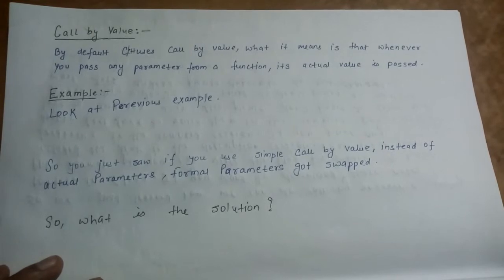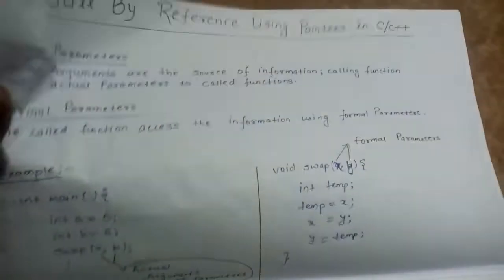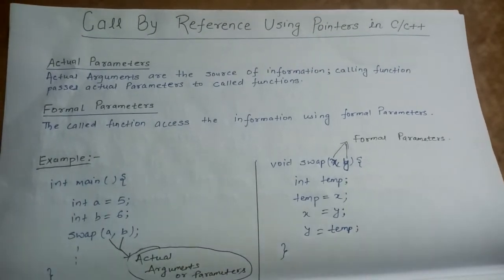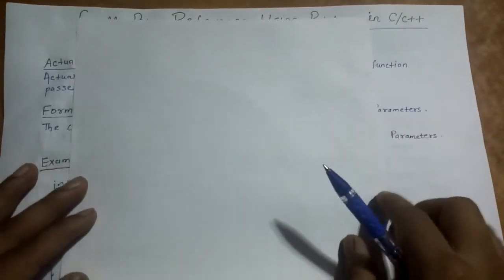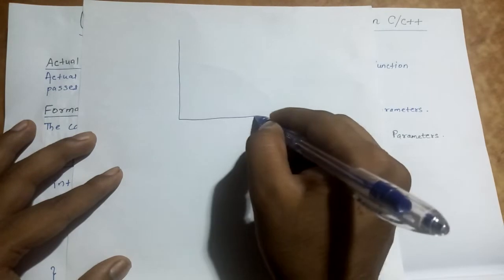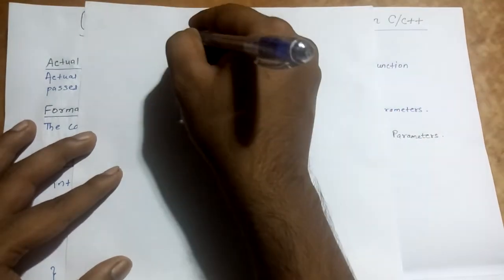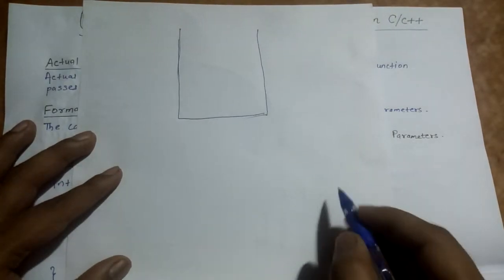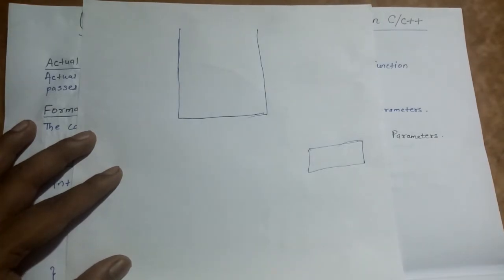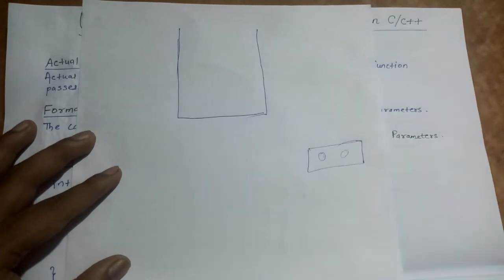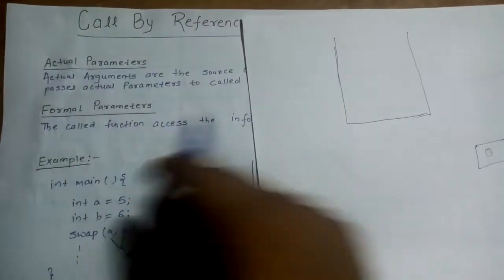Now we will look at an example to understand the limitation of call by value and why we need call by reference. We will use the previous example to show this. You should understand the concept of the stack and the local block of a function inside this stack. During the execution of a program, we have a global stack, and every function which is invoked is allocated a block in this stack. All the local variables declared inside a function are stored in this local block. Whenever the function completes its execution, this block is emptied and cleared.